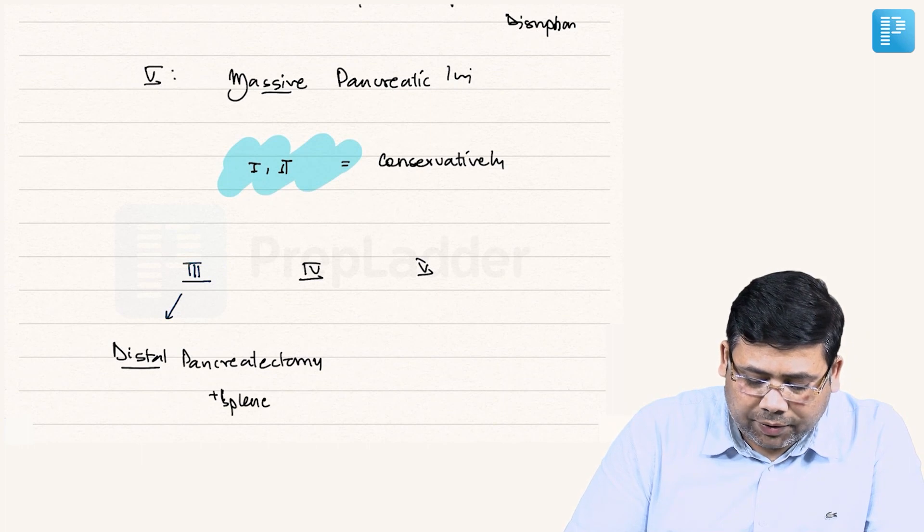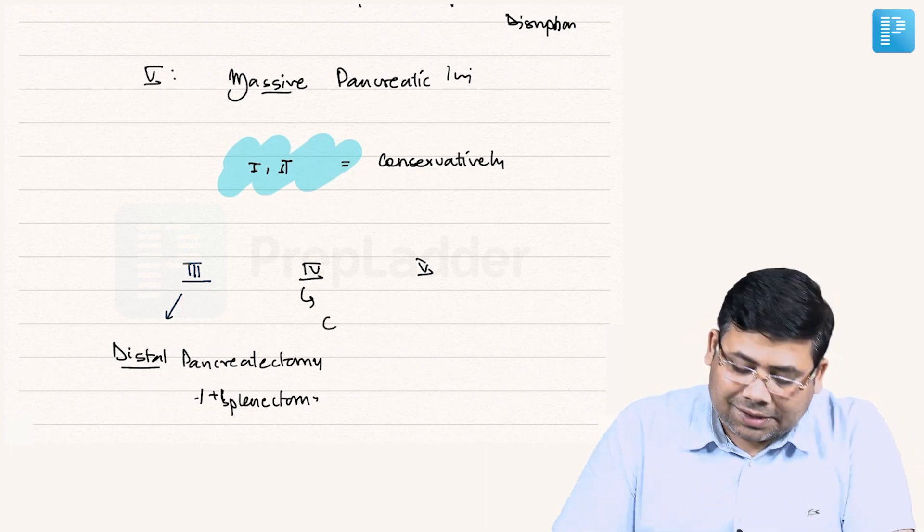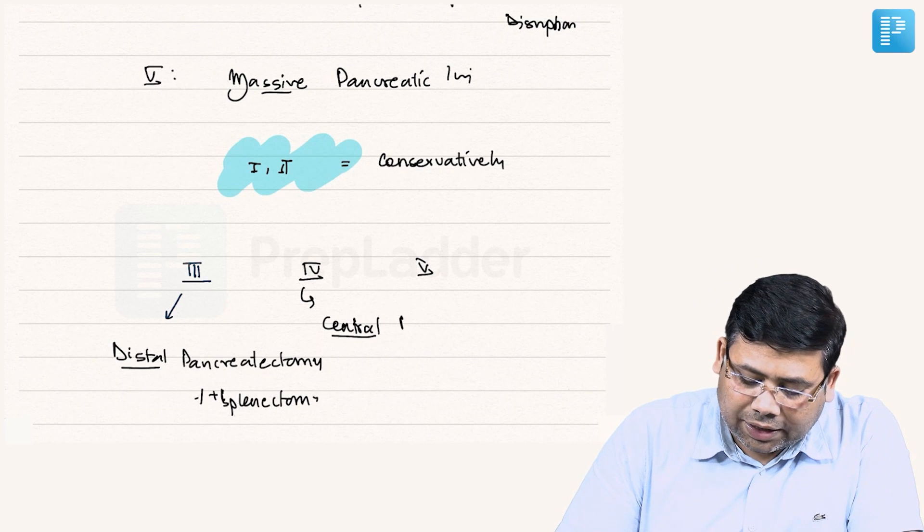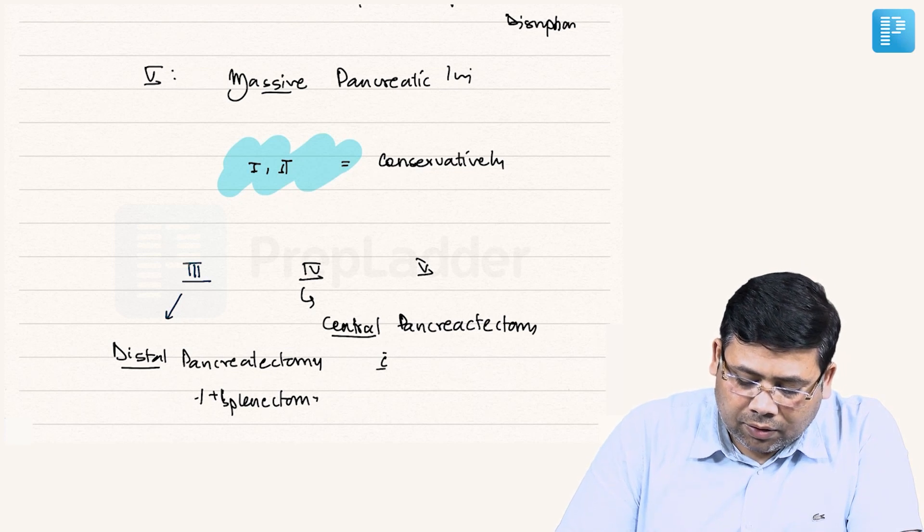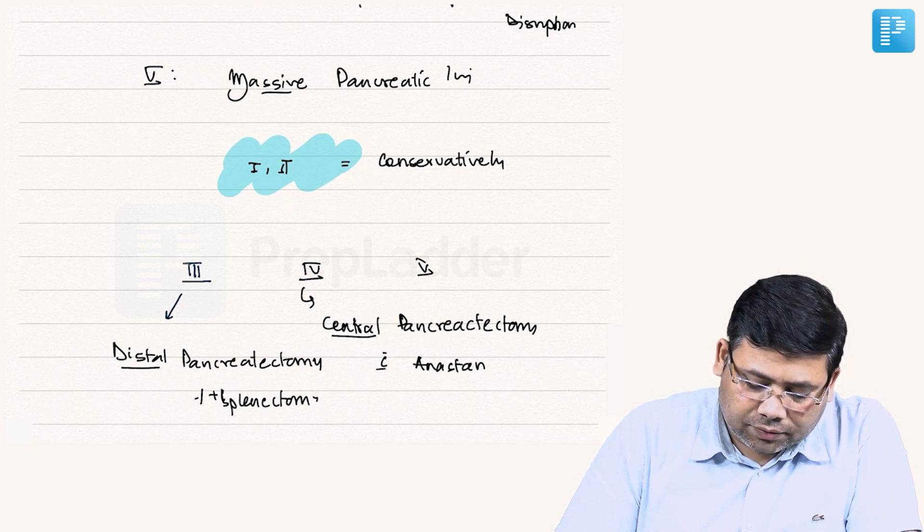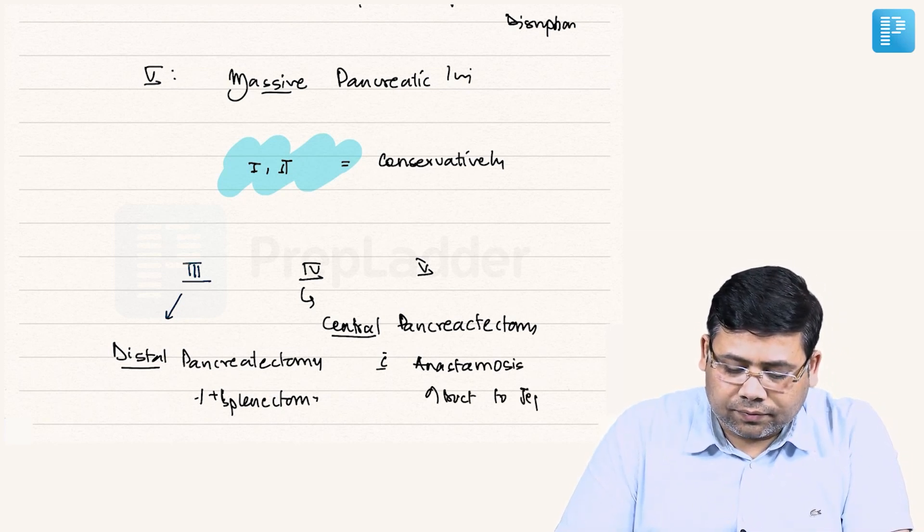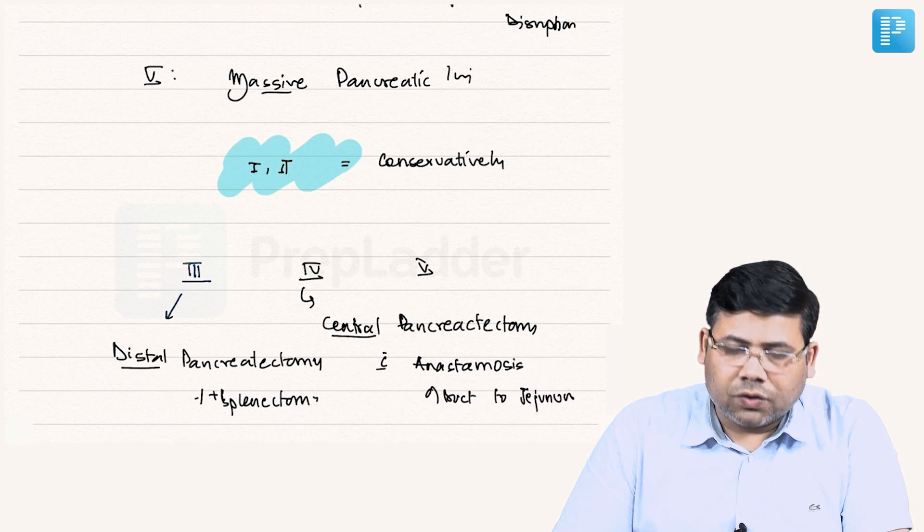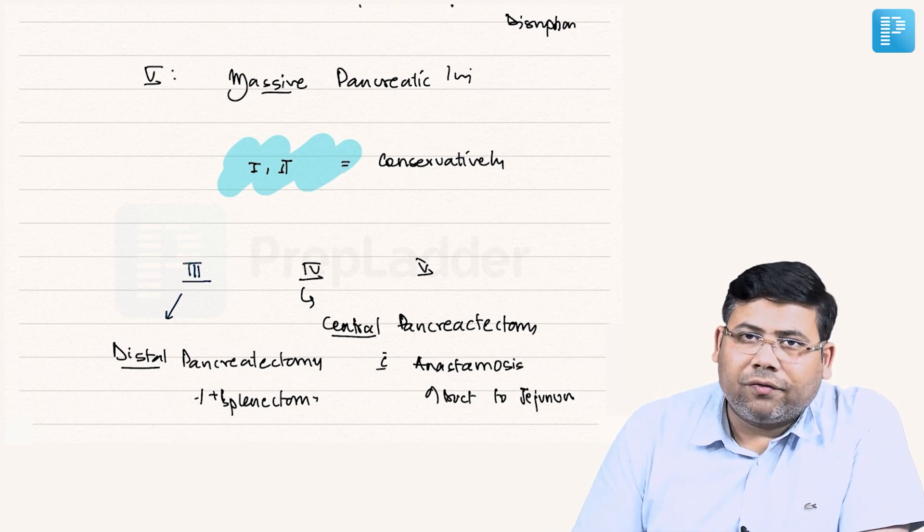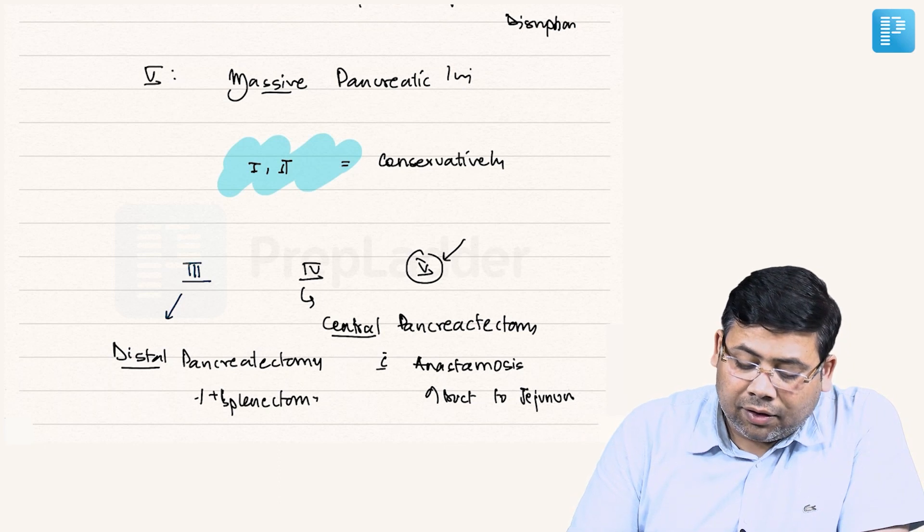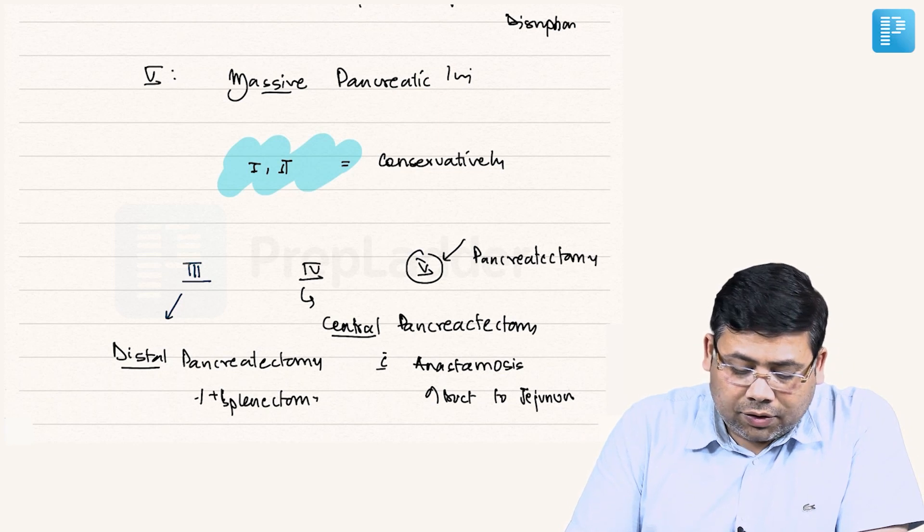And this is your choice: if there is a splenic injury you can go for splenectomy also, so plus or minus splenectomy. If you talk about grade four, this is central pancreatic resection. So you will remove the part of central pancreatectomy with anastomosis of duct to jejunum. This is just like what we do in Whipple's, basically. You remove that part and you will bring the loop of jejunum, so Roux-en-Y reconstruction is done. And here, grade five, this is the one where you need to do pancreatectomy.